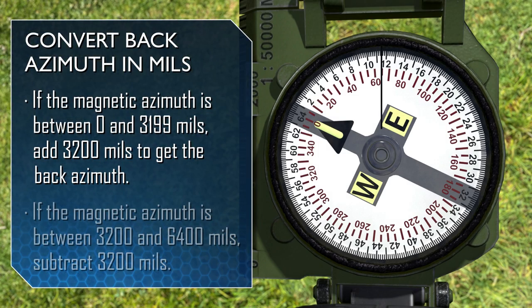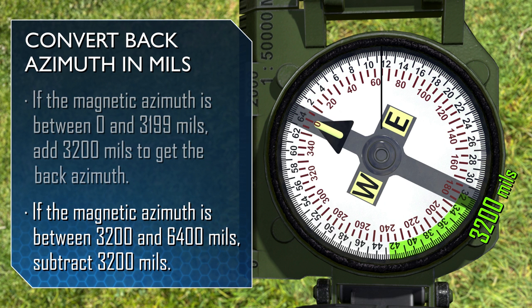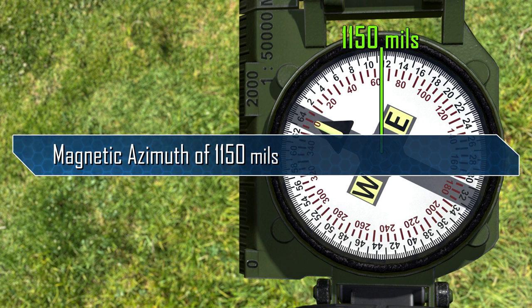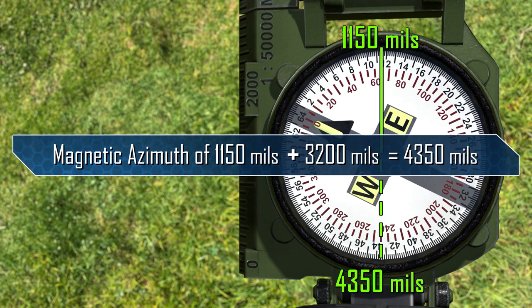If the magnetic azimuth to convert is between 0 and 3199 mils, add 3200 mils to get the back azimuth. Between 3200 and 6400 mils, subtract 3200. In this example, using 1150 mils — since 1150 mils is less than 3200 mils — add 3200 mils to convert the back azimuth.